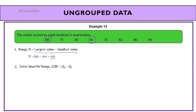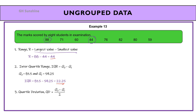Second, the inter-quartile range (IQR). From the previous example, Q3 equals 81.5 and Q1 equals 59.25, therefore IQR equals Q3 minus Q1, which is 22.25. Third, quartile deviation: Q3 minus Q1 divided by 2, using the same Q1 and Q3 values, giving QD equal to 11.125.